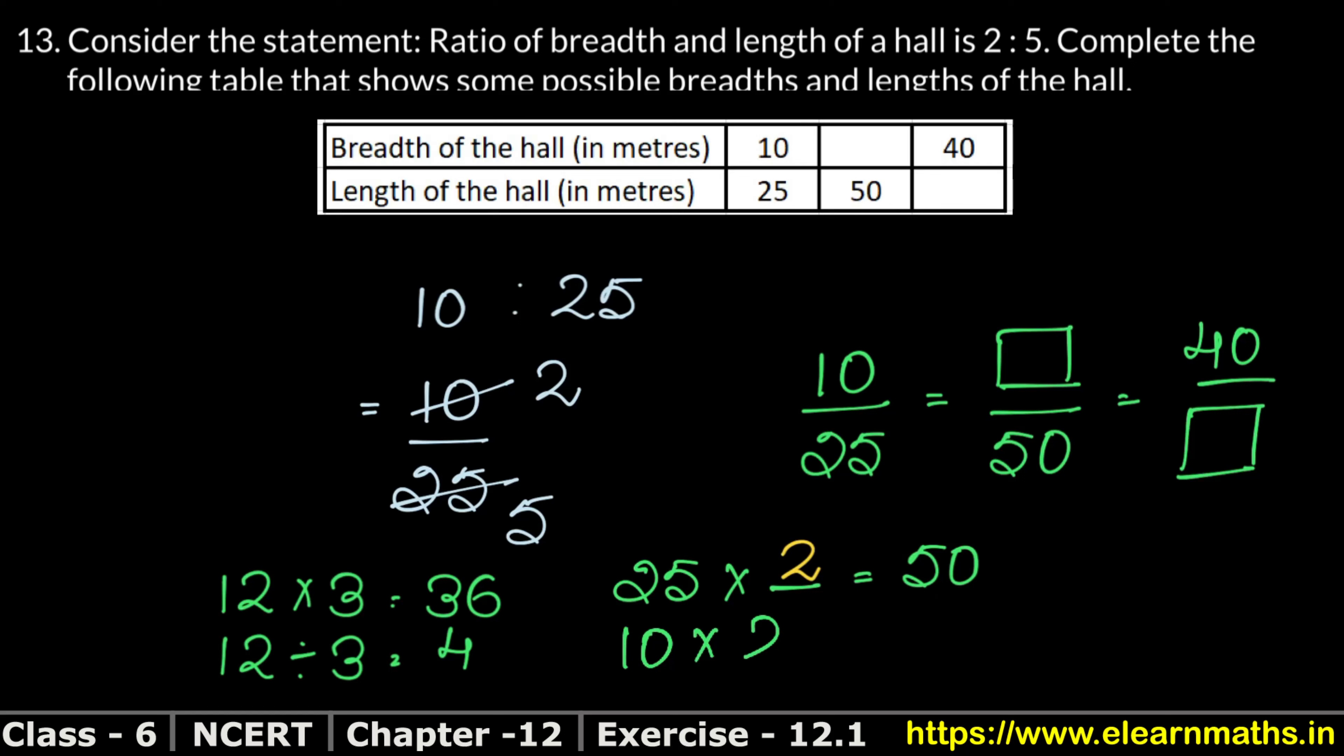10 into 2 is 20, so the answer here is 20. These equals signs show these three are equivalent and equal to each other. If you reduce them, you'll get the same: 2 upon 5. The zeros cancel out, giving 2 upon 5, just as stated in the question that breadth and length ratio is 2:5. In this case also 2:5.